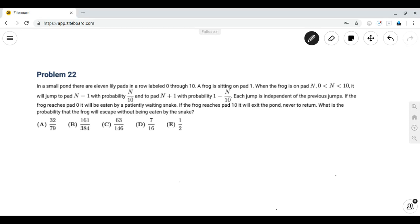The problem reads: in a small pond there are 11 lily pads labeled 0 through 10. A frog is sitting on pad 1. When the frog is on pad n, it will jump to pad n-1 with probability n over 10 and to pad n plus 1 with probability 1 minus n over 10. Each jump is independent of the previous jumps.